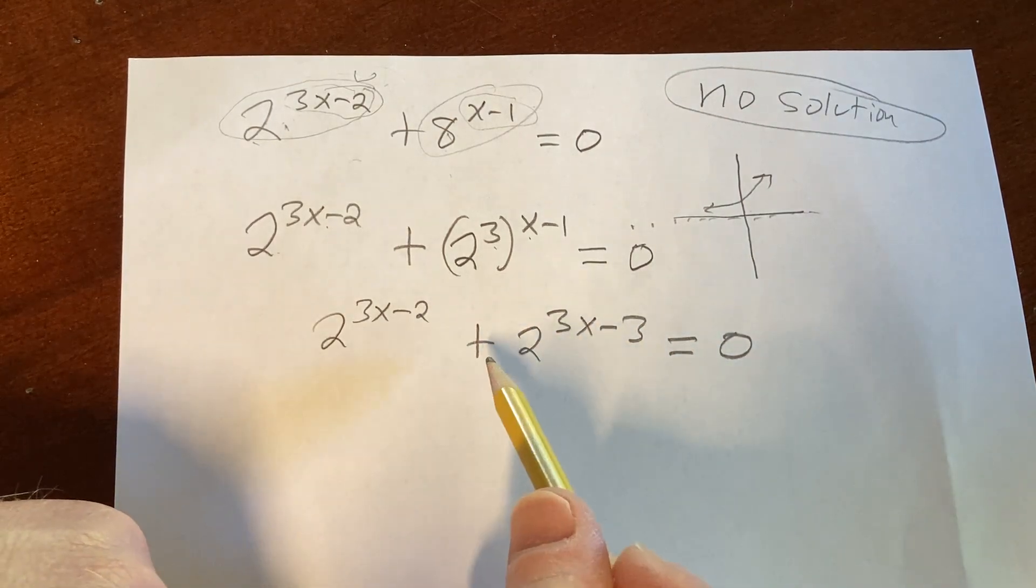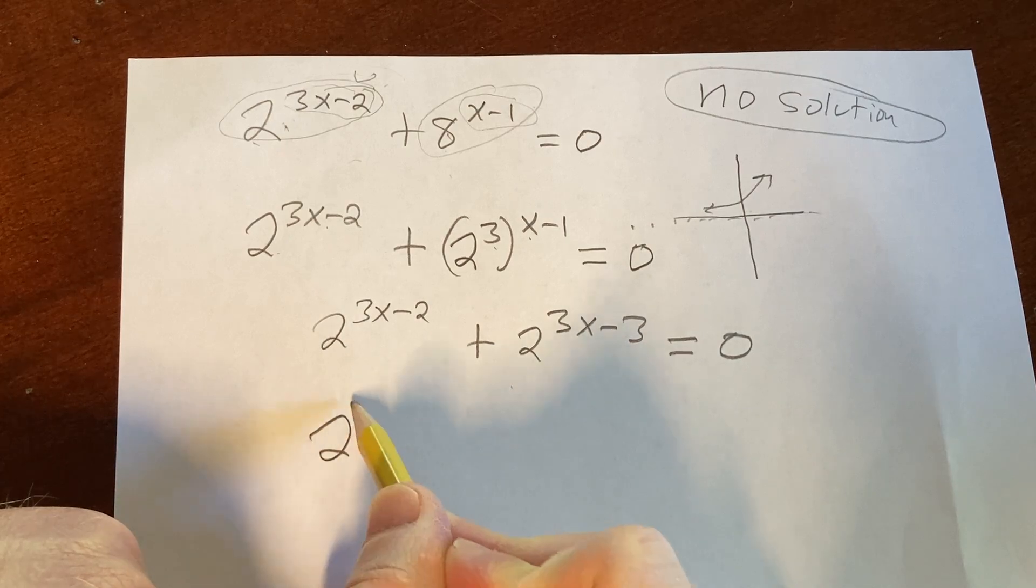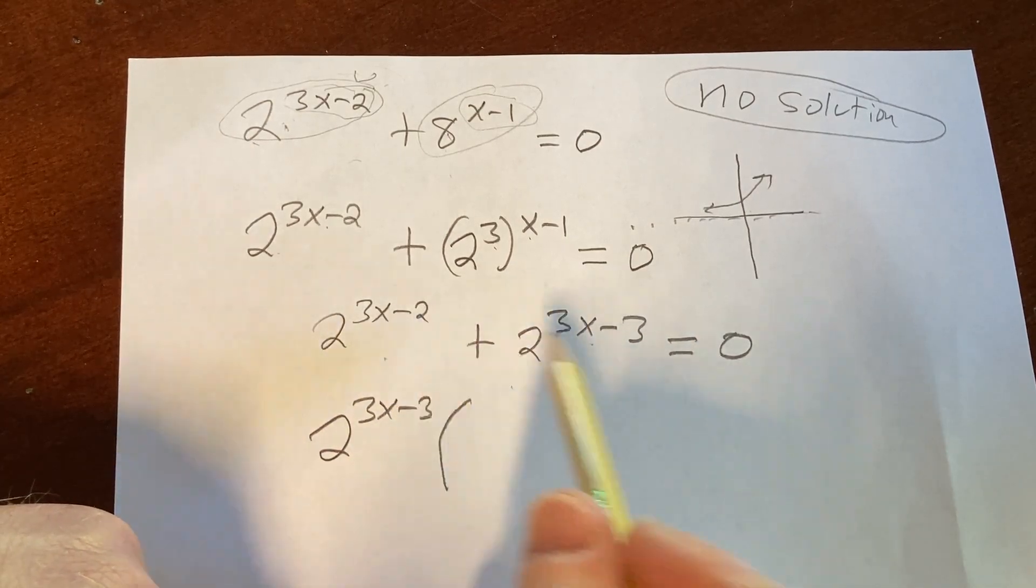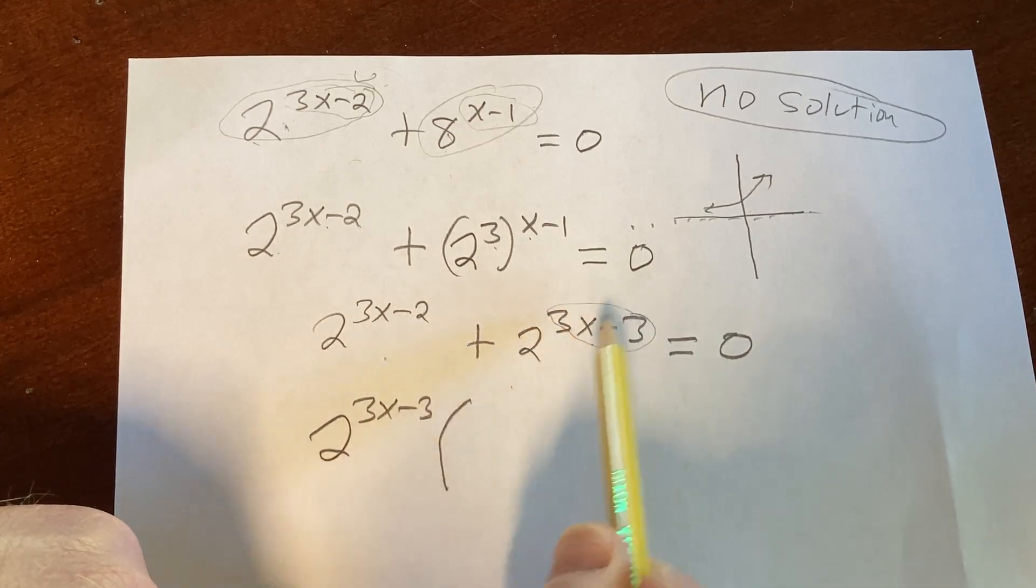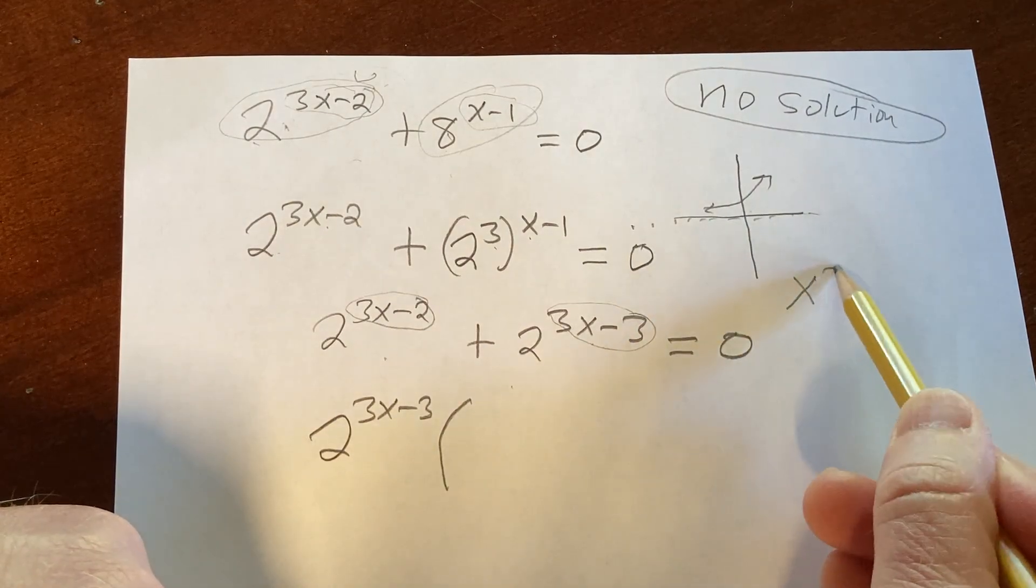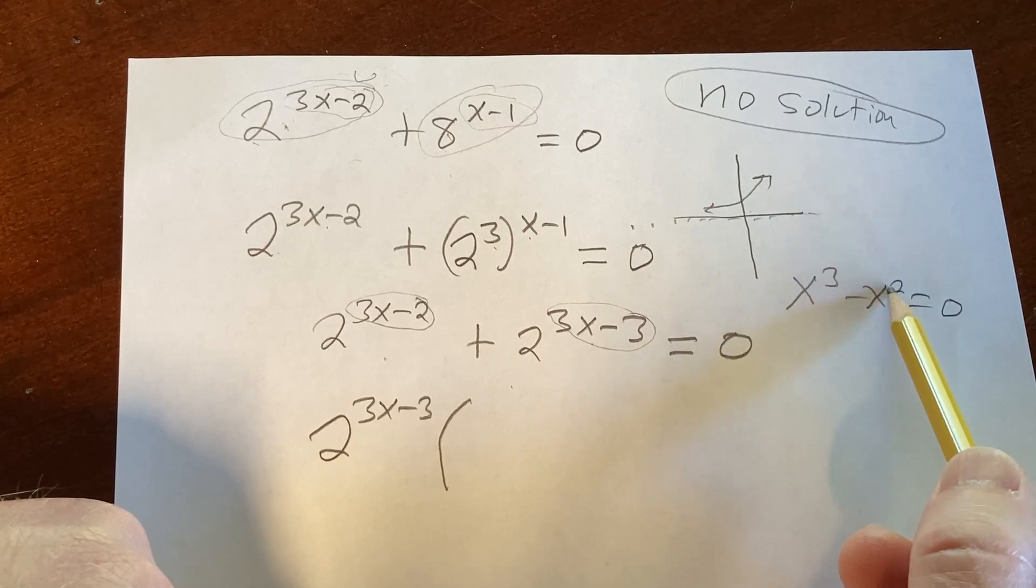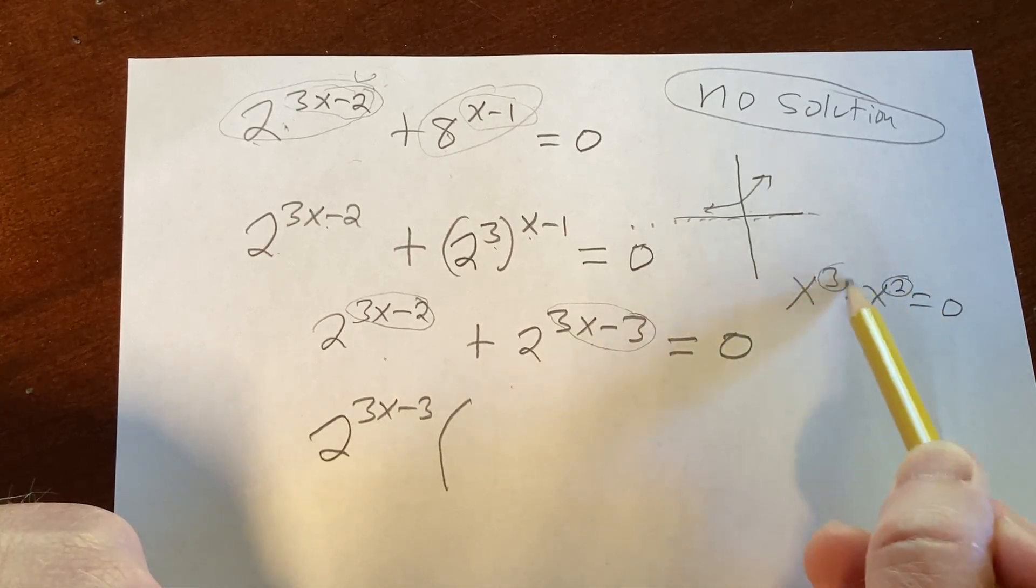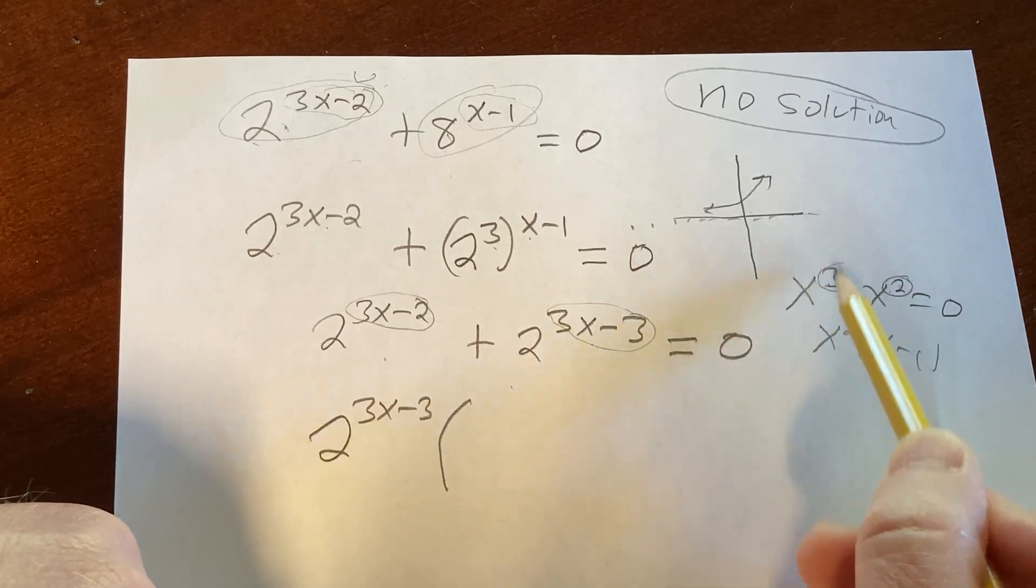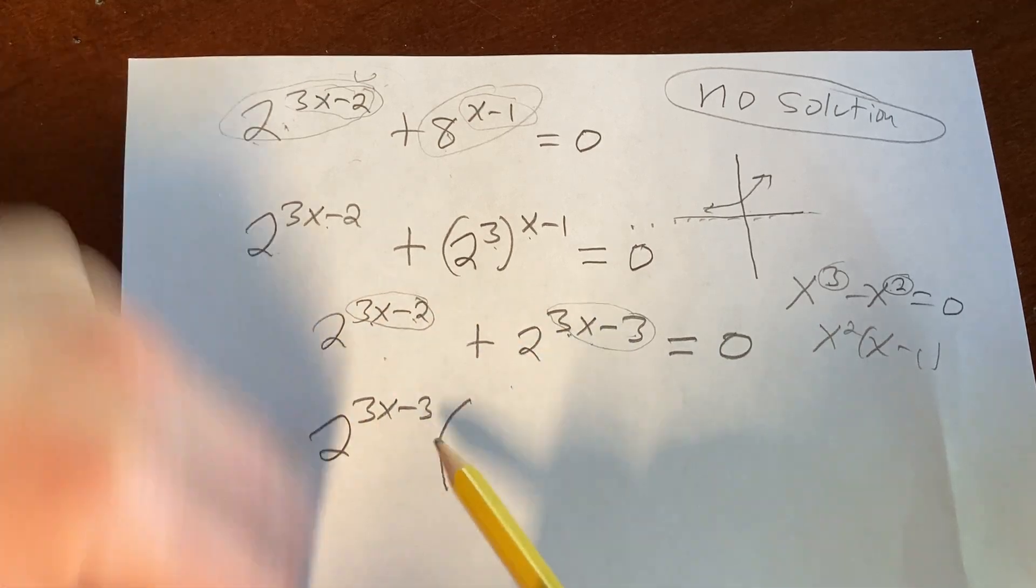So now what you can do is you can actually factor out 2 to the 3x minus 3 like this. And the reason I know to factor that one out is because this exponent is smaller than this one. If you think about basic factoring, like let's say you have x cubed minus x squared equals 0. In this case, you would pull out an x squared and notice that 2 is smaller than 3. So you do x squared, x minus 1. And notice 2 is smaller. Here, 3x minus 3 is smaller than 3x minus 2, so that's the one you pull out.